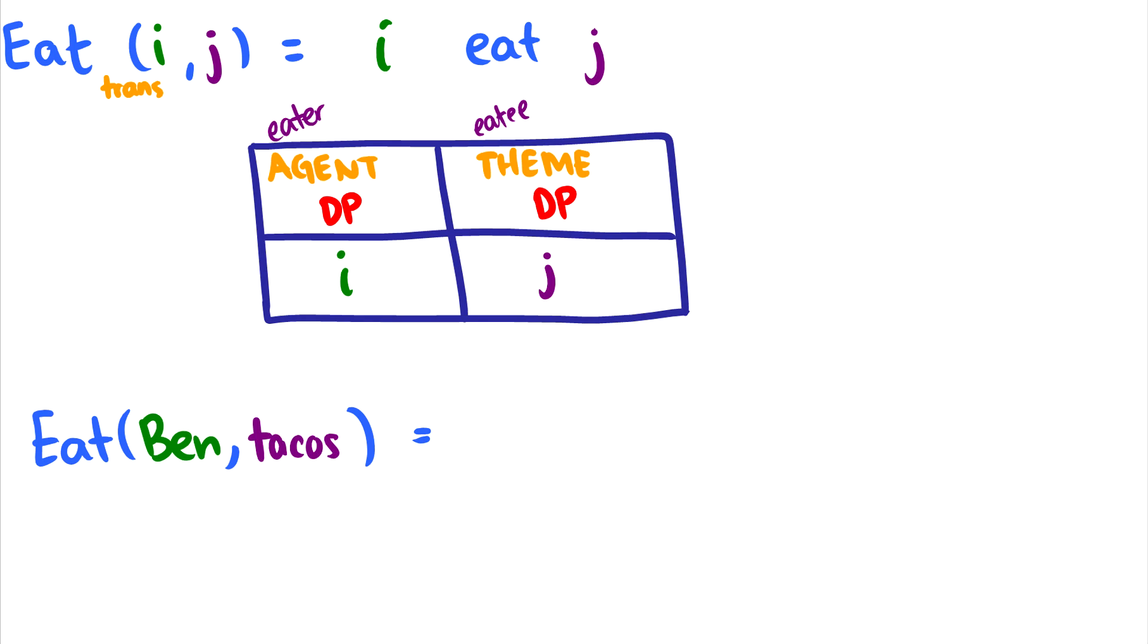In fact, we can take a look at this in predicate logic form. This isn't something I formally introduced, but if you watch the mathematical linguistic series, you will see this type of representation, so you can learn it there if you truly wish to. And what this says is we just replace the first argument with Ben and the second argument with tacos, and then we get the sentence, Ben eats tacos.